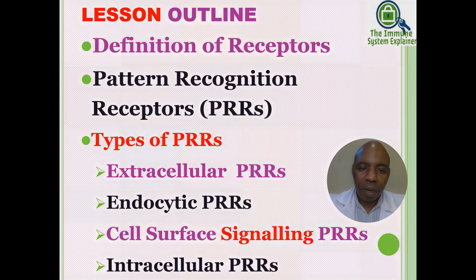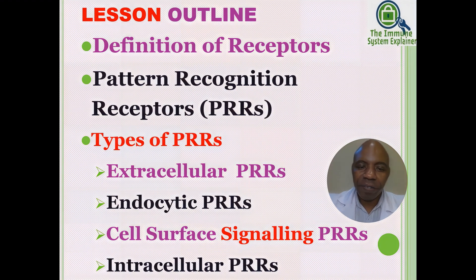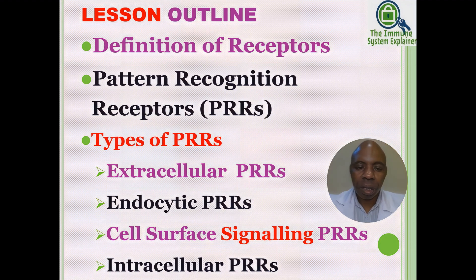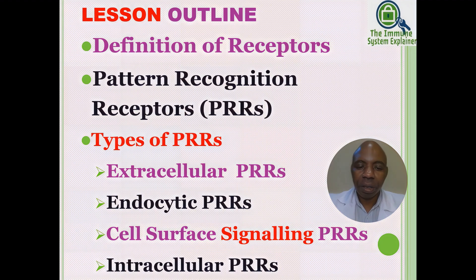First, let's go through the overview of the course outline. We're going to define receptors, talk about pattern recognition receptors — PRRs — and discuss the different types of PRRs, including extracellular PRRs, endocytic PRRs, cell surface signaling PRRs, and intracellular PRRs.